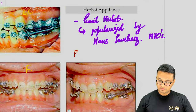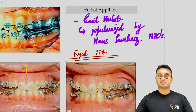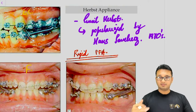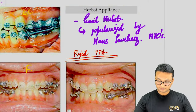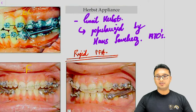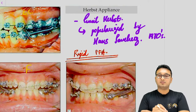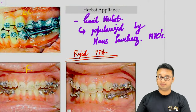This is a rigid fixed functional appliance. There are rigid, flexible, and semi-flexible fixed functional appliances. The Herbst is rigid because it does not allow much lateral movement of the mandible — that is why it is called a rigid fixed functional appliance.